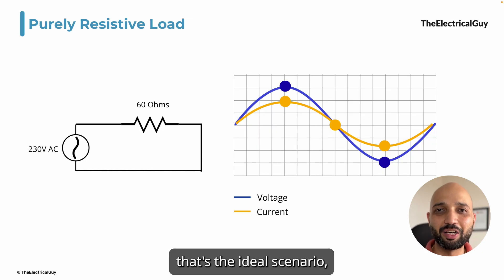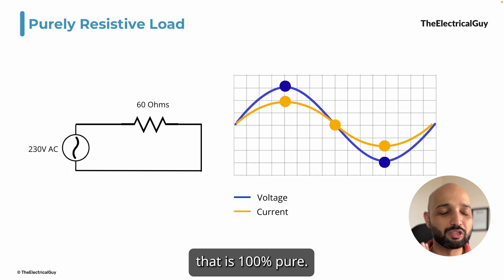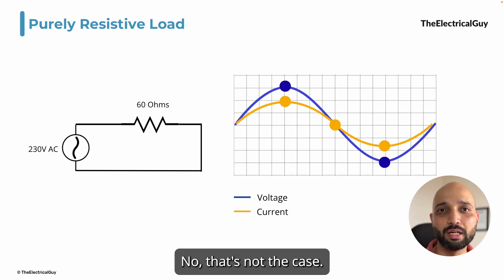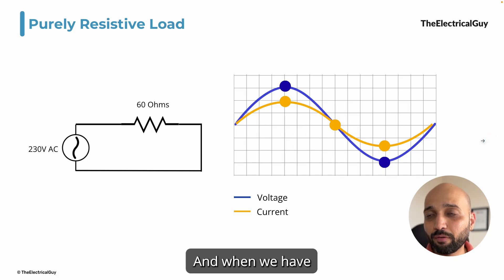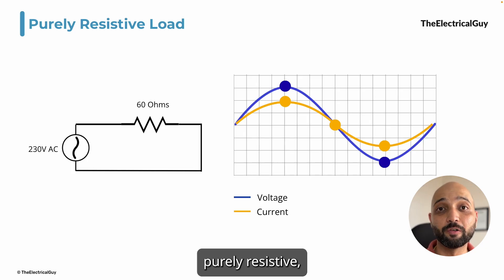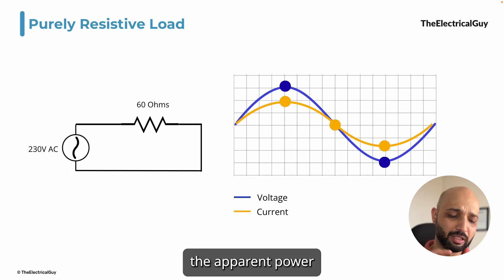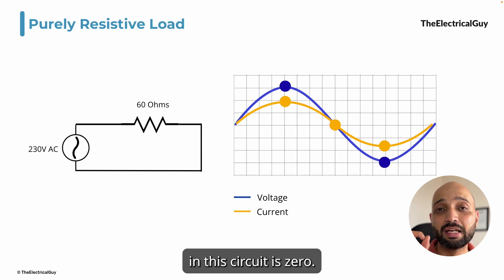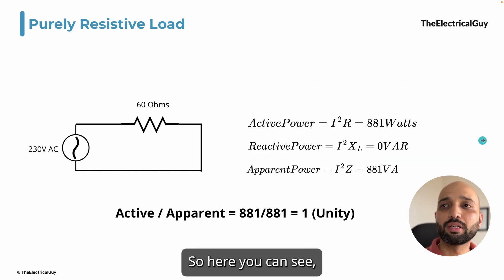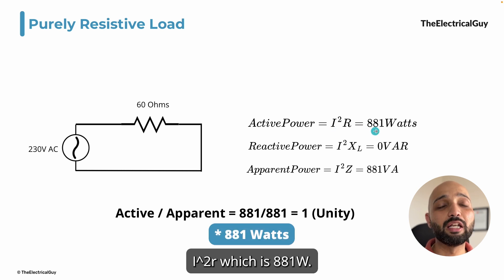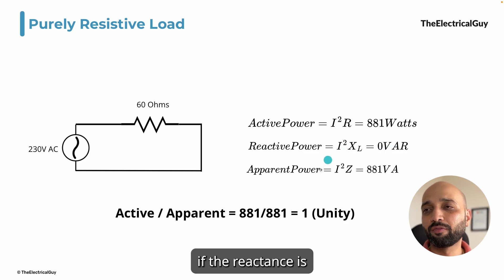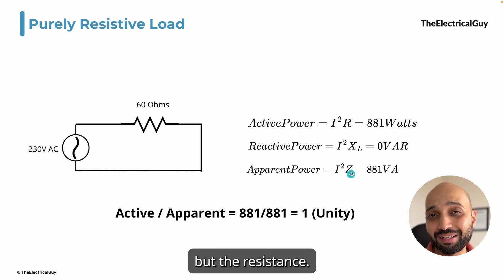This perfectly in-phase condition is seen in purely resistive circuits only, and it's an ideal scenario — in practical life you won't find a 100% purely resistive industrial load. In this situation all types of power — apparent power and active power — are identical, because the reactive power in this circuit is zero. The active power is 181 watts, there is no reactive power, and since there is no reactance the impedance equals resistance.